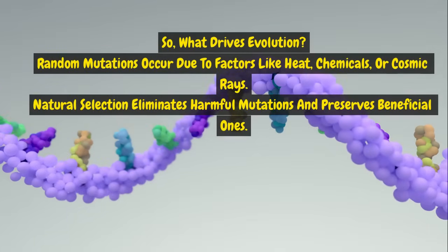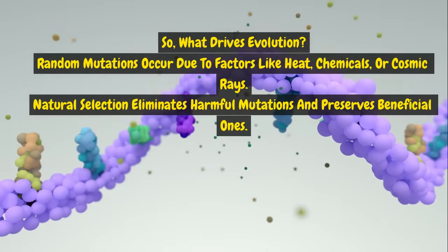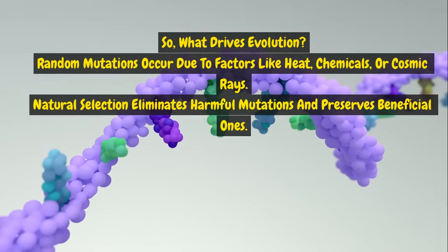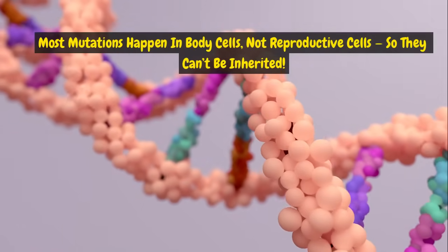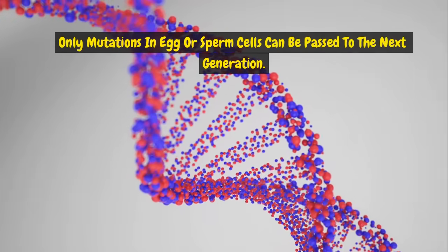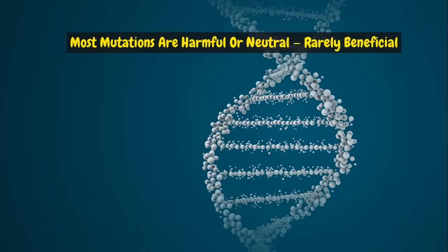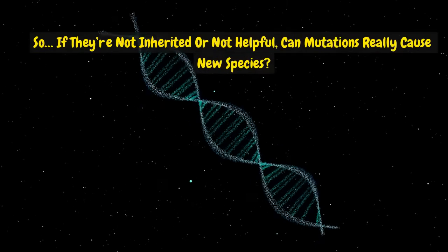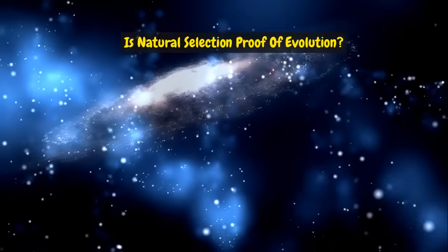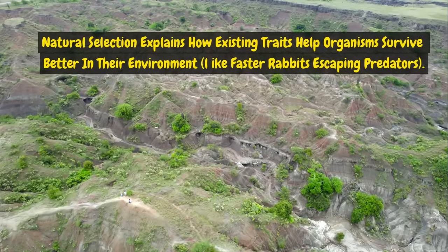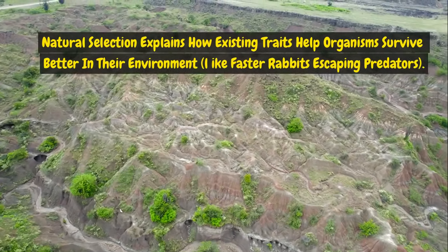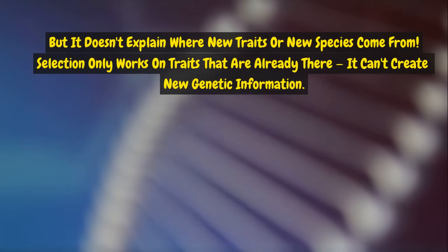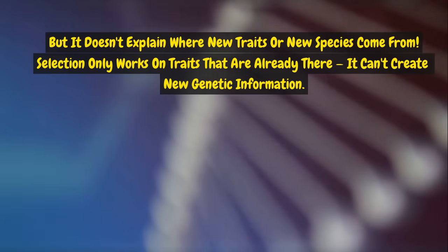What drives evolution? Random mutations occur due to factors like heat, chemicals, or cosmic rays. Natural selection eliminates harmful mutations and preserves beneficial ones. Most mutations happen in body cells, not reproductive cells, so they can't be inherited — only mutations in egg or sperm cells can be passed to the next generation. Most mutations are harmful or neutral, rarely beneficial. If they're not inherited or not helpful, can mutations really cause new species? Natural selection explains how existing traits help organisms survive, like faster rabbits escaping predators, but it doesn't explain where new traits or new species come from. Selection only works on traits that are already there — it can't create new genetic information.